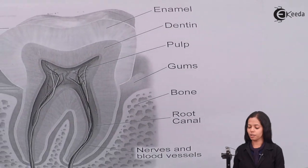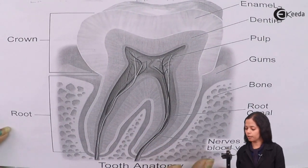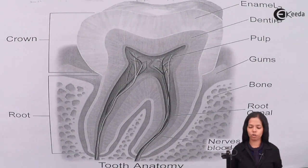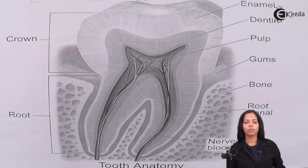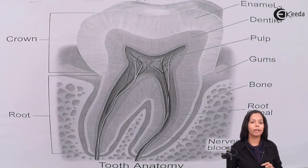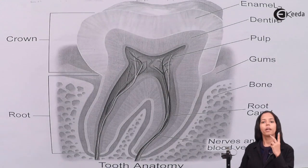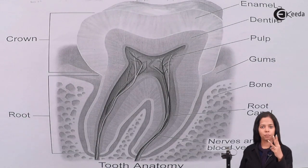We will study the detailed structure of tooth, also called the anatomy of the tooth. Observe this diagram carefully. The part of the tooth is divided into three regions: crown, neck, and root region.